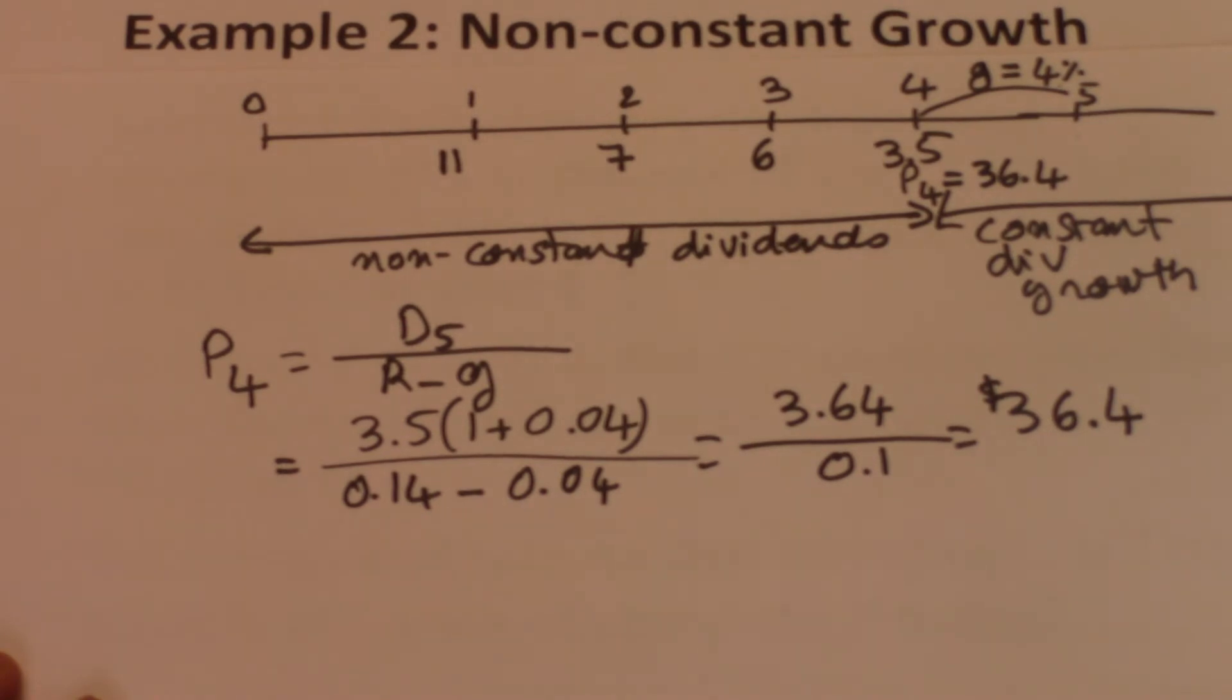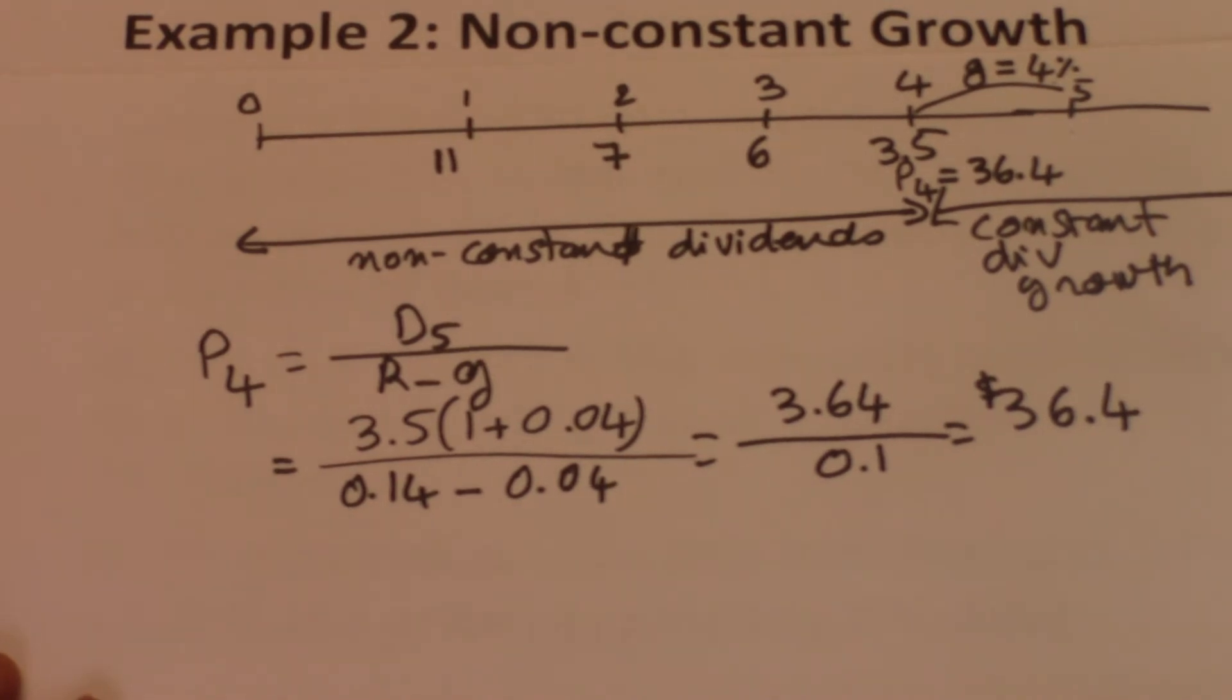Now that we have identified all of our cash flows, what we need to do is discount these cash flows back to the present.